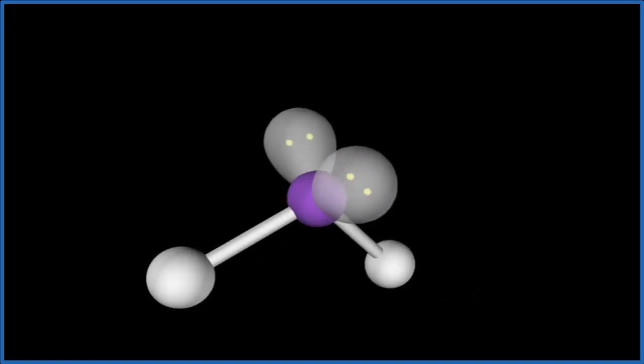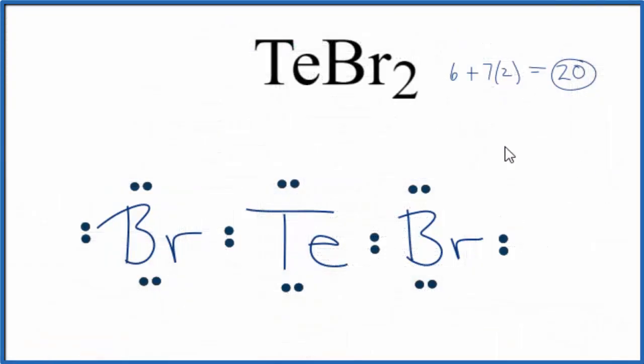We have these four steric groups here. Back to our Lewis structure. We can see how these two lone pairs result in our bent molecular geometry. This is Dr. B with the Lewis structure for TeBr2 and the molecular geometry. Thanks for watching.